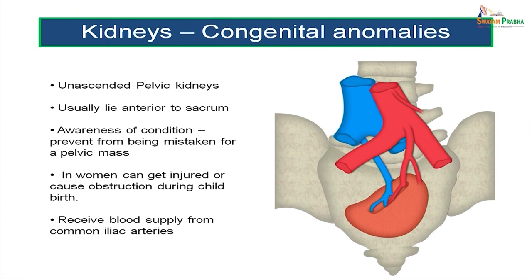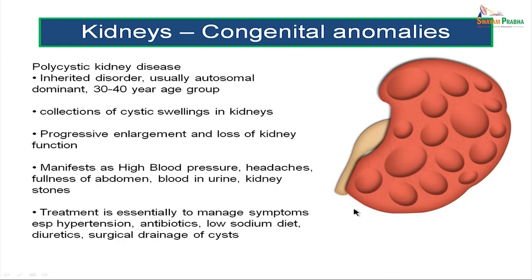It is very important to realize that a kidney can remain in the pelvic region without ascending to its adult position in the lumbar region. In women, an unascended kidney can get injured or cause obstruction during childbirth. This unascended kidney usually receives blood supply from the common iliac arteries. Polycystic kidney disease is an inherited autosomal dominant disorder occurring in the 30 to 40 year old age group, consisting of collections of swellings on the kidneys causing progressive enlargement and loss of kidney function. It manifests as high blood pressure, headaches, fullness of abdomen, blood in urine, and kidney stones. Treatment involves managing symptoms — especially hypertension — with antibiotics, low sodium diet, diuretics, and surgical drainage of the cysts.